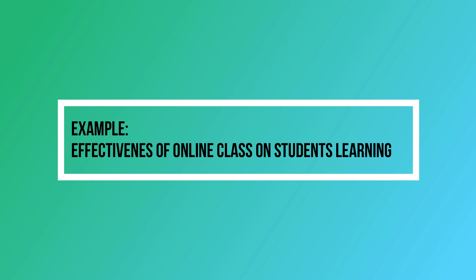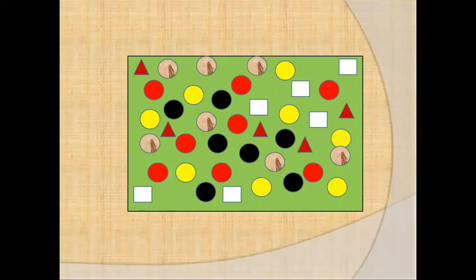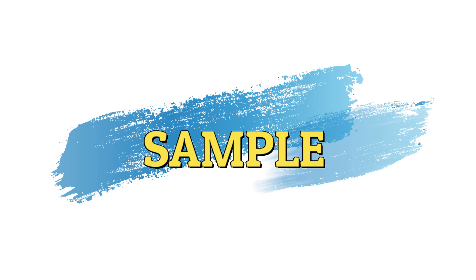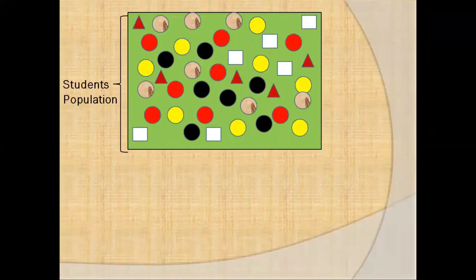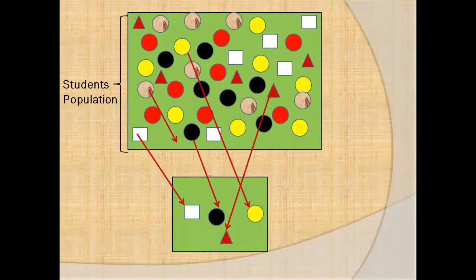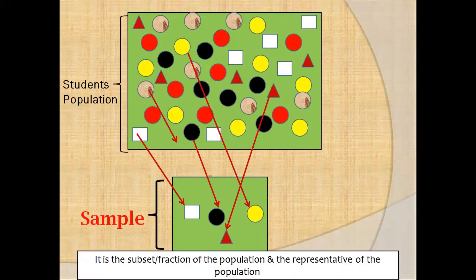For conducting this study, the target population will be the student population. Let's assume that there are 1,000 students, and all the students are placed within this green rectangle box here. So therefore these 1,000 students will represent the student population. From the student population of 1,000, collection of data from each and every student in the population might not be possible. Therefore, in such a situation, only a few students are selected. Let's say 100 students are selected out of 1,000. So these 100 selected students will represent this student population, and these are referred to as the sample. Therefore a sample is a subset or a fraction of the population.